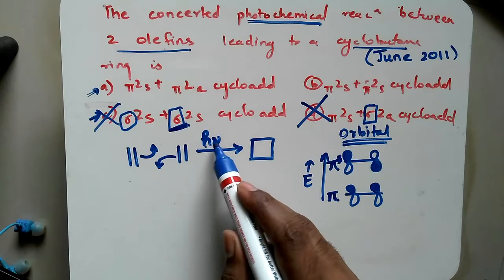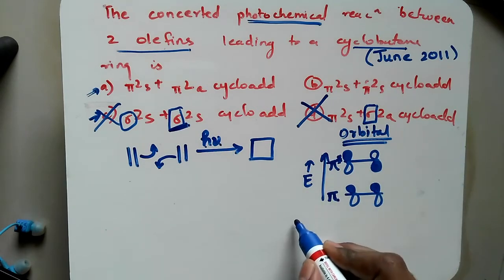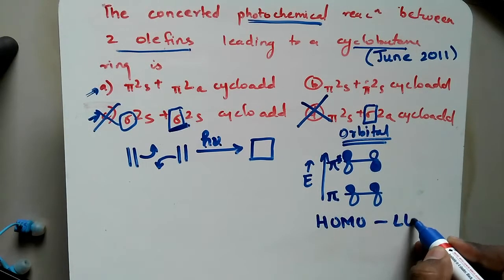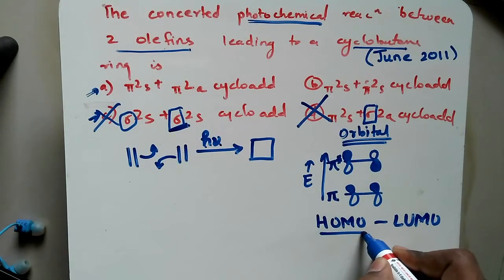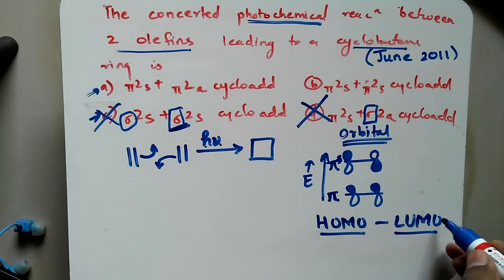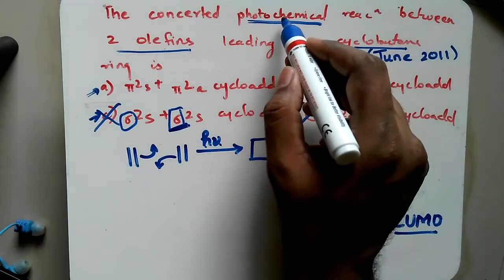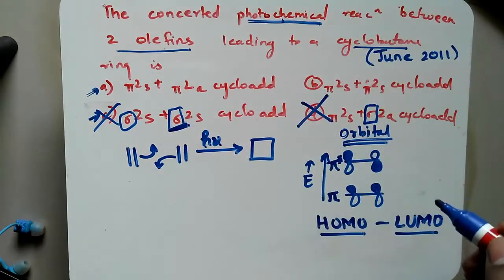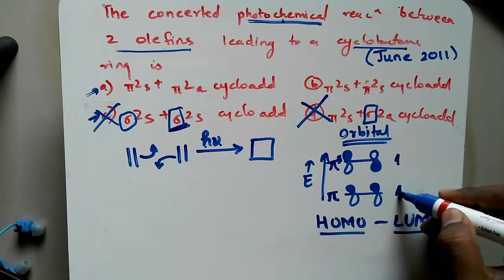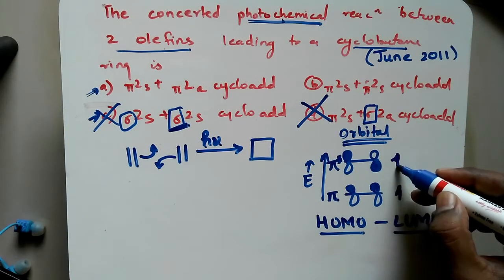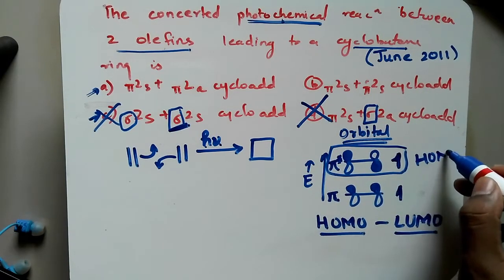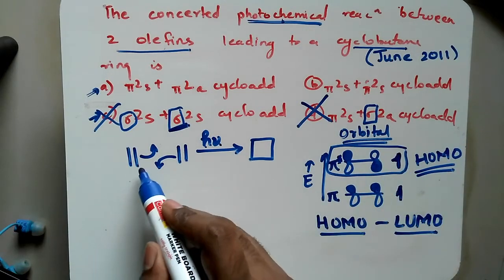The next condition is hν. Another important factor in cycloaddition reactions is the HOMO–LUMO interaction. HOMO means highest occupied molecular orbital and LUMO is lowest unoccupied molecular orbital. Under photochemical conditions, one electron from the ethene gets excited to the next level, and this excited orbital becomes the HOMO for that ethene molecule.